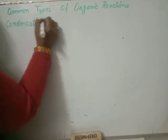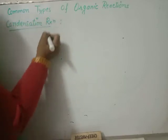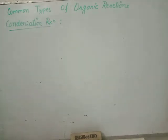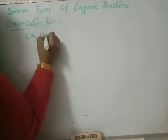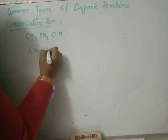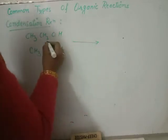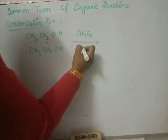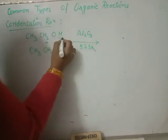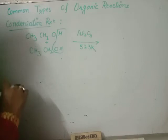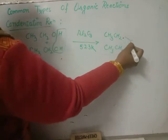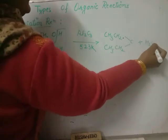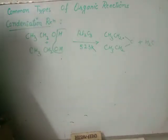Condensation reactions are those reactions in which two or more molecules come in contact with each other and release some simple molecules like water, alcohol, or ammonia. For example, suppose you have two moles of ethanol. Under the influence of a dehydrating agent at 523°C, they condense with each other and release water, giving diethyl ether — two ethyl groups combined together by a common oxygen with water released. These are known as condensation reactions.